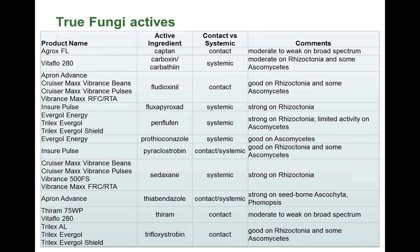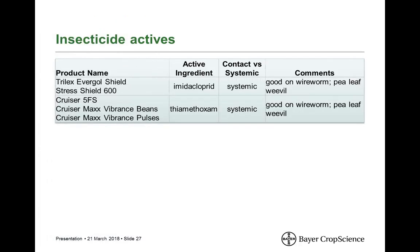From an insect perspective, there are really only two actives on the market for pulses right now: imidacloprid and thiamethoxam. They're both highly systemic and both quite good at protecting from wireworms and pea leaf weevil.